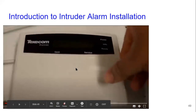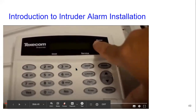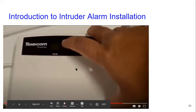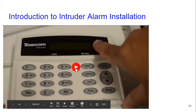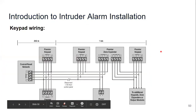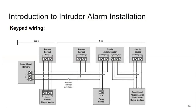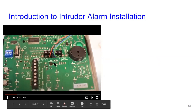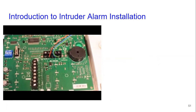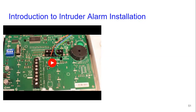Looking at this Texacom keypad — it's a surface mount type. You can get flush mount, or different colors like gold or chrome. For wiring, you can go from keypad to keypad rather than running separate cables from each to the panel. When you take the enclosure out, you get terminals T, R, plus and minus. T and R are for data transmit and receive, plus and minus are for power.